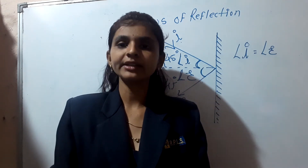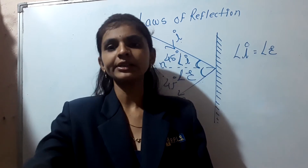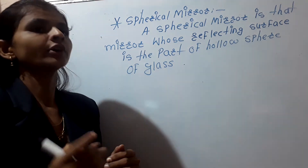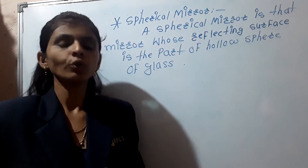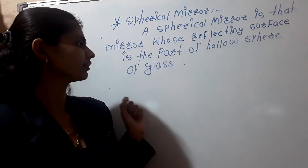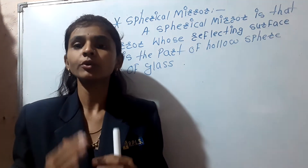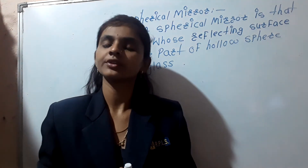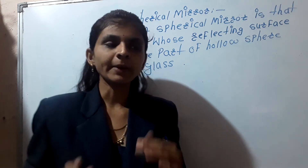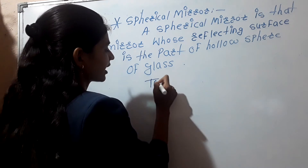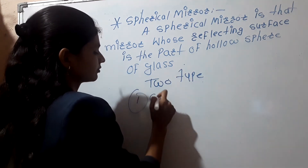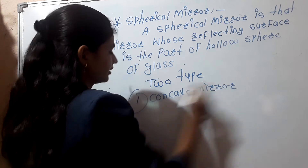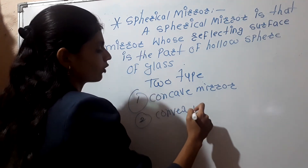Now let us move towards the spherical mirror. The spherical mirror is a mirror whose reflecting surface is the part of a hollow sphere of glass. The spherical mirror has two types: the first is the concave mirror and the second is the convex mirror.